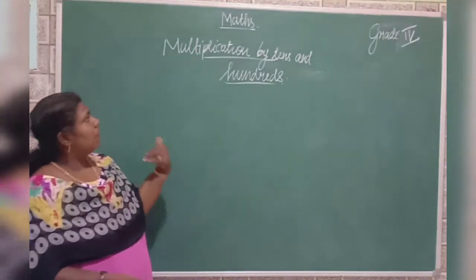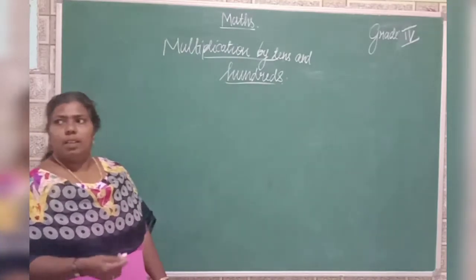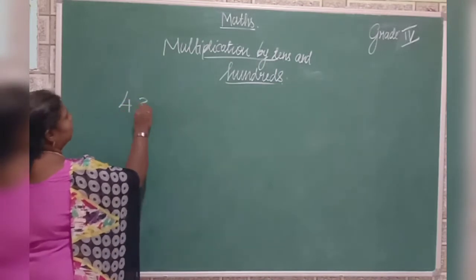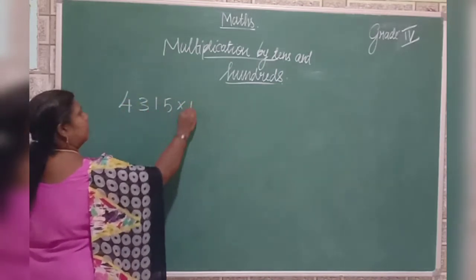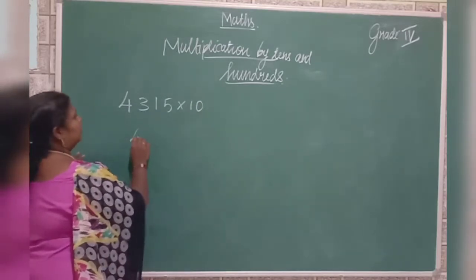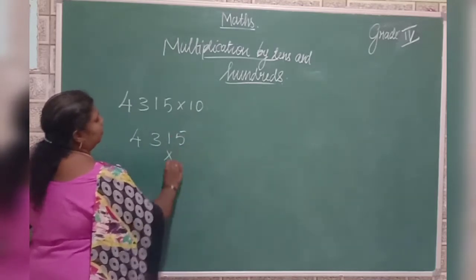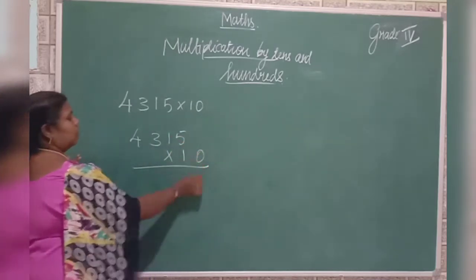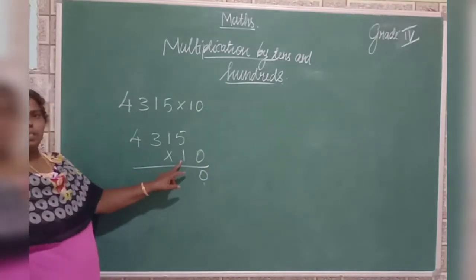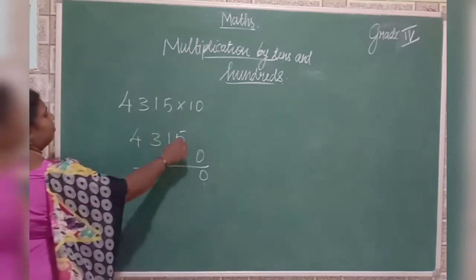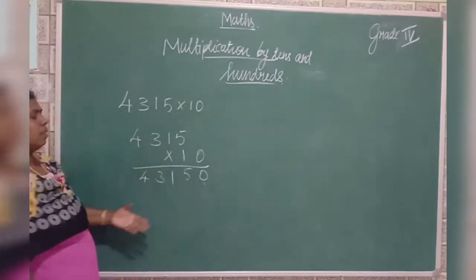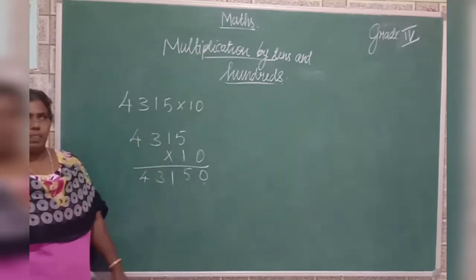First, we are going to discuss about multiplication by tens and hundreds. For example, a four-digit number: 4315 into 10. How can we multiply this? If 4315 into 10, then this zero — you can add it here. That means write this zero down. Then use the first table: 1×5 is 5, 1×1 is 1, 1×3 is 3, 1×4 is 4. So you can easily get the answer.